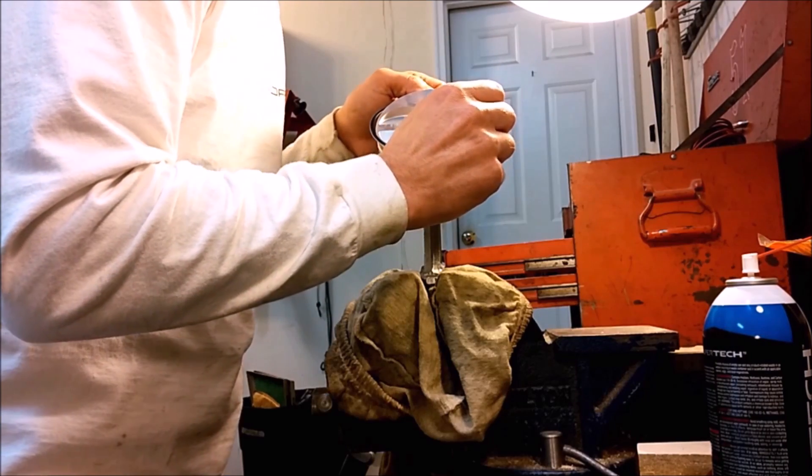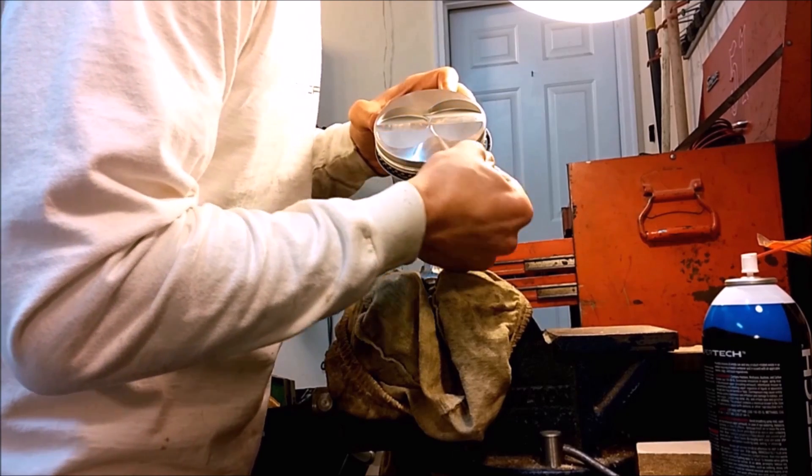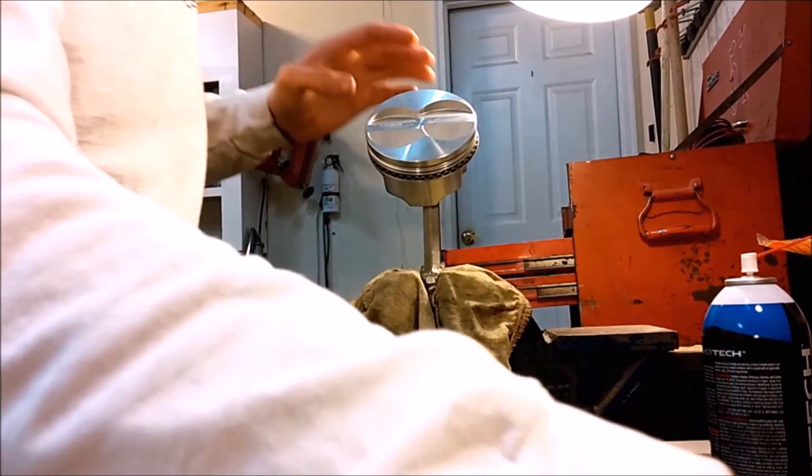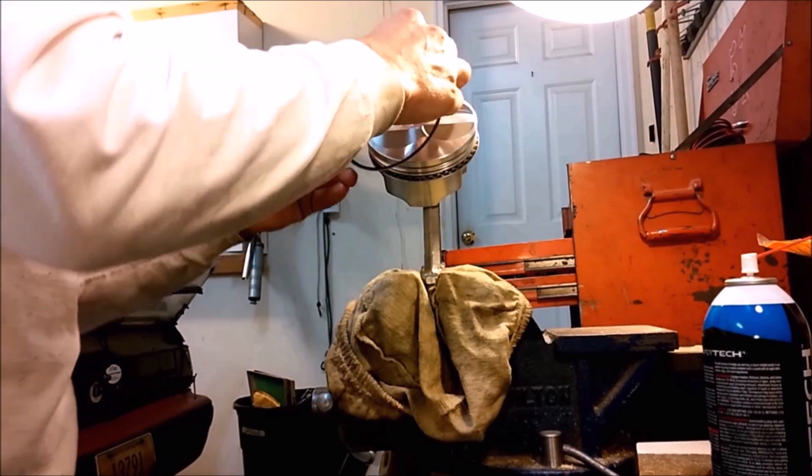Next we'll install the top and bottom rings for the oil control ring. About the ten and a half position, bottom side of the oil control ring. The second one goes on the top side of the oil control ring in the seven o'clock position.